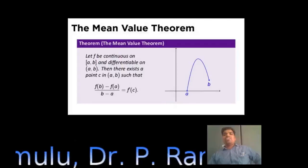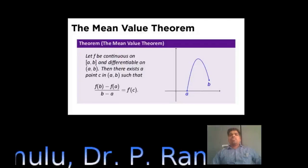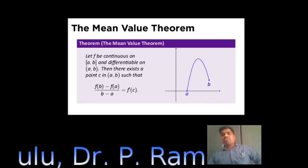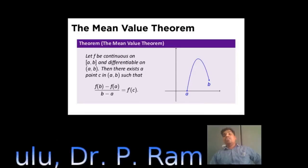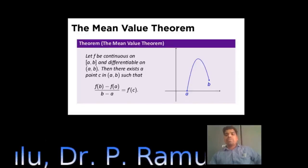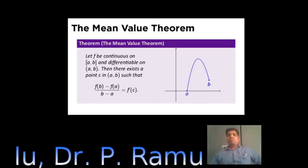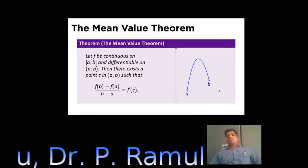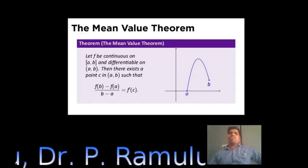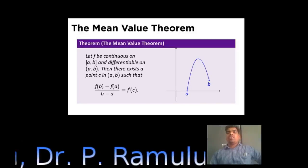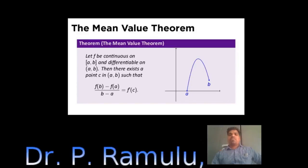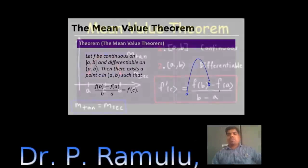The Mean Value Theorem — Lagrange's Mean Value Theorem: If a function f is continuous on closed interval [a, b] and differentiable on open interval (a, b), then there exists a point C in (a, b) such that f(b) minus f(a) divided by b minus a equals f'(C). So C lies strictly between a and b.